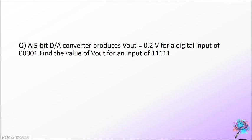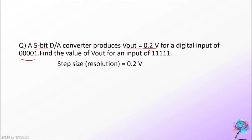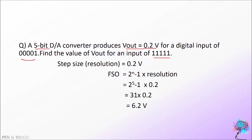Consider this problem: a 5-bit DAC produces Vout equal to 0.2 volt for a digital input of 00001. Find the value of Vout for an input of 11111. For a 5-bit DAC, the step size or resolution is 0.2 volt, since the first step gives 0.2 volt. The input 11111 corresponds to the full scale output. Full scale output equals 2 raised to N minus 1 into resolution. Substituting the values gives full scale output equal to 6.2 volt.